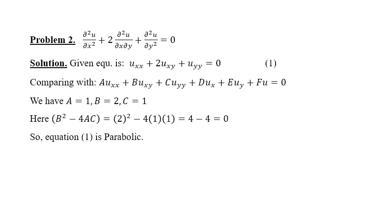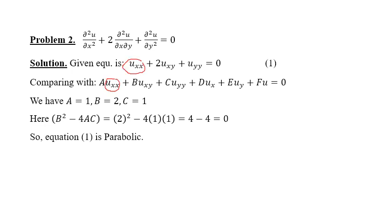Next example: ∂²u/∂x² + 2·∂²u/∂x∂y + ∂²u/∂y² = 0, or u_xx + 2u_xy + u_yy = 0. Here A = 1, B = 2, C = 1. Then B²−4AC = 4 − 4·1·1 = 0, so this equation is parabolic. For the third example: ∂²u/∂x² + 3·∂²u/∂y² = ∂u/∂x, giving A = 1, B = 0, C = 3. Then B²−4AC = 0 − 12 = −12 < 0, so this equation is elliptic.